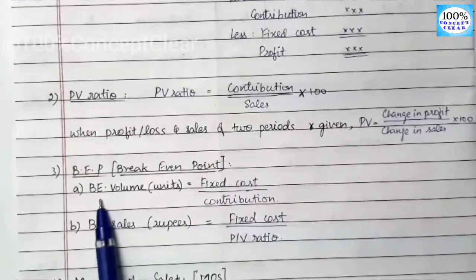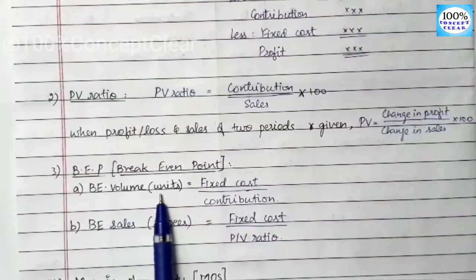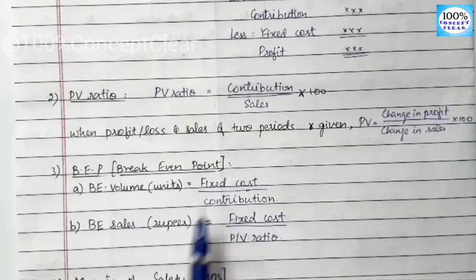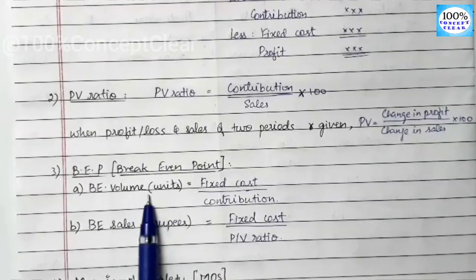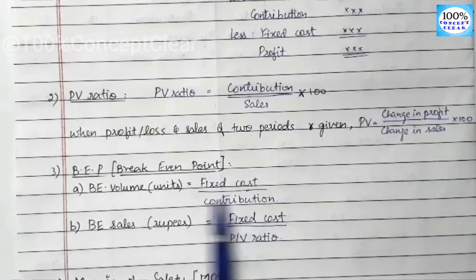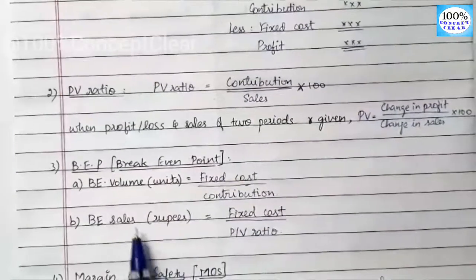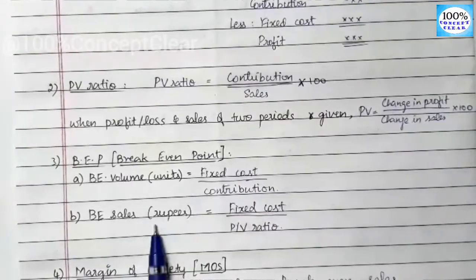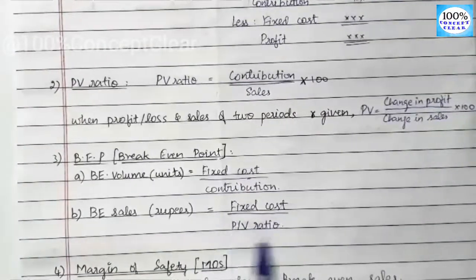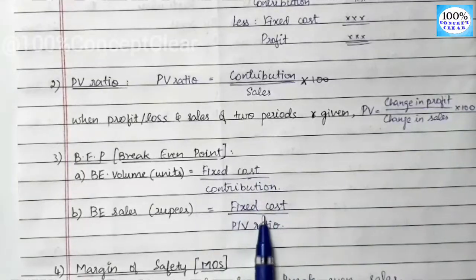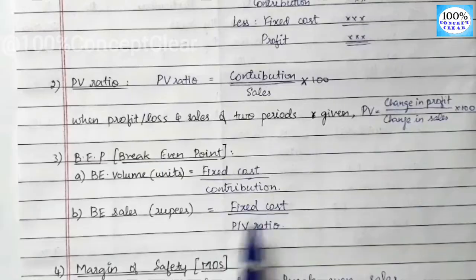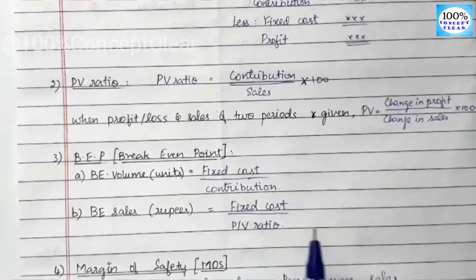The break-even volume in units is Fixed Cost divided by Contribution per unit. The break-even sales in rupees is Fixed Cost divided by PV ratio.